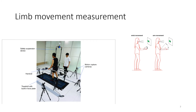Limb movement measurement: through the eye movement index measurement during limb movement, researchers can understand the relevant visual research information and related reactions when the athlete is performing limb movement, so as to understand the movement mode and perform subsequent sports training improvement.